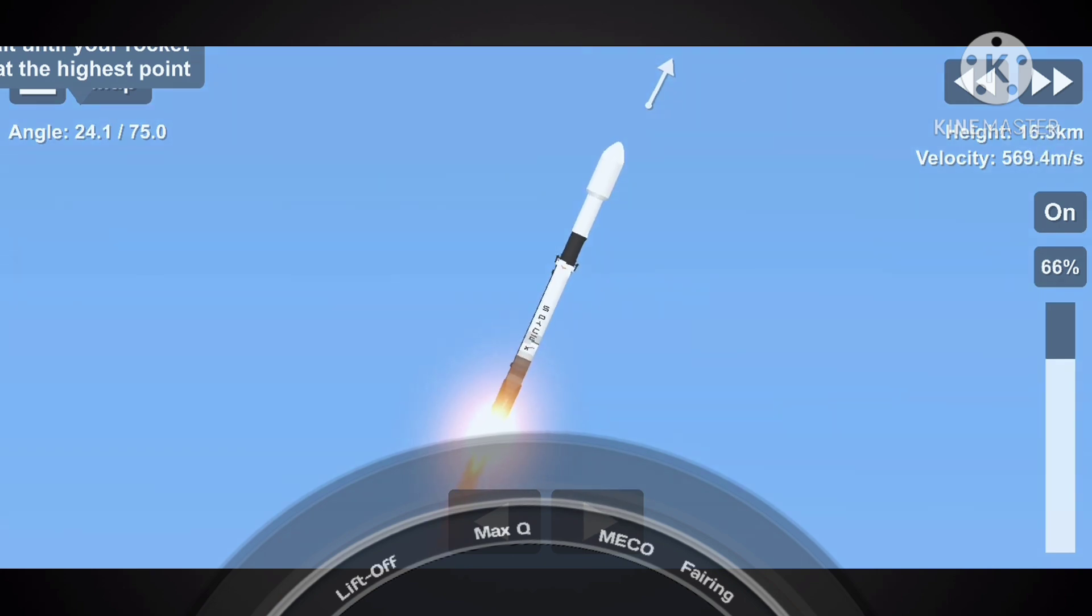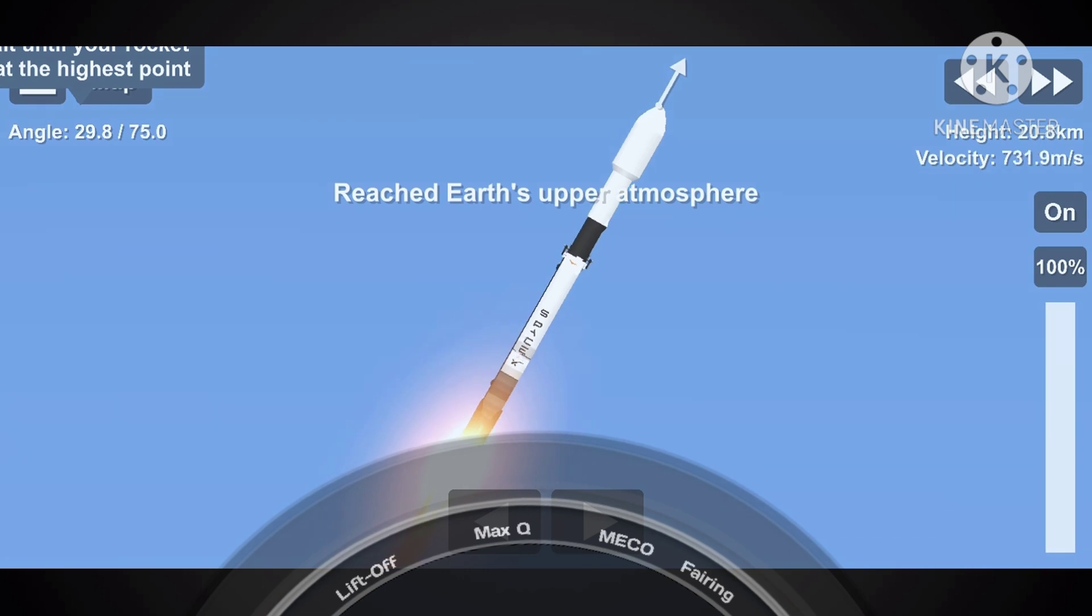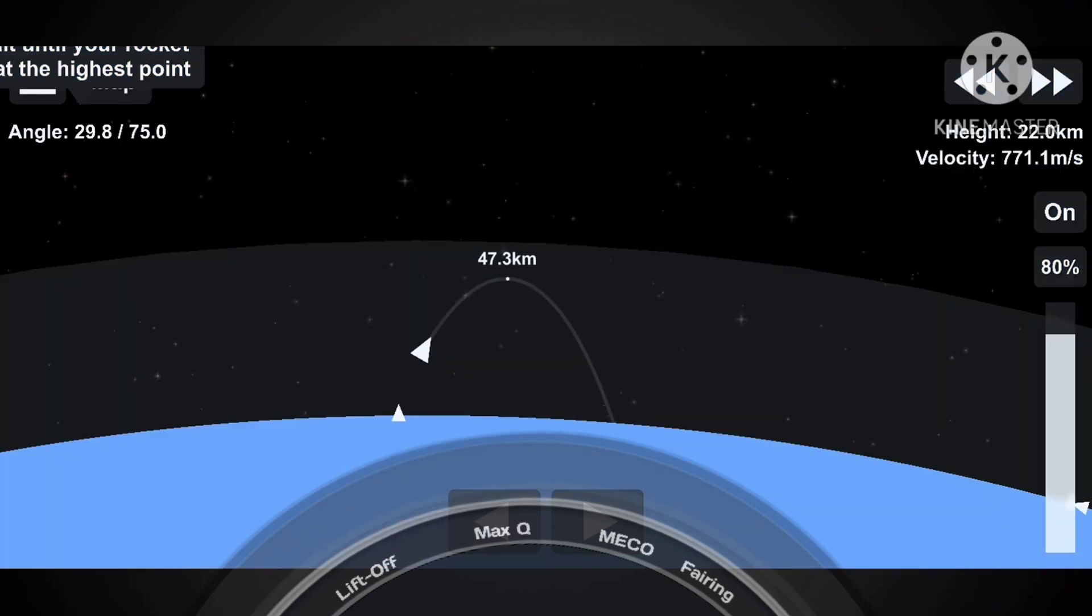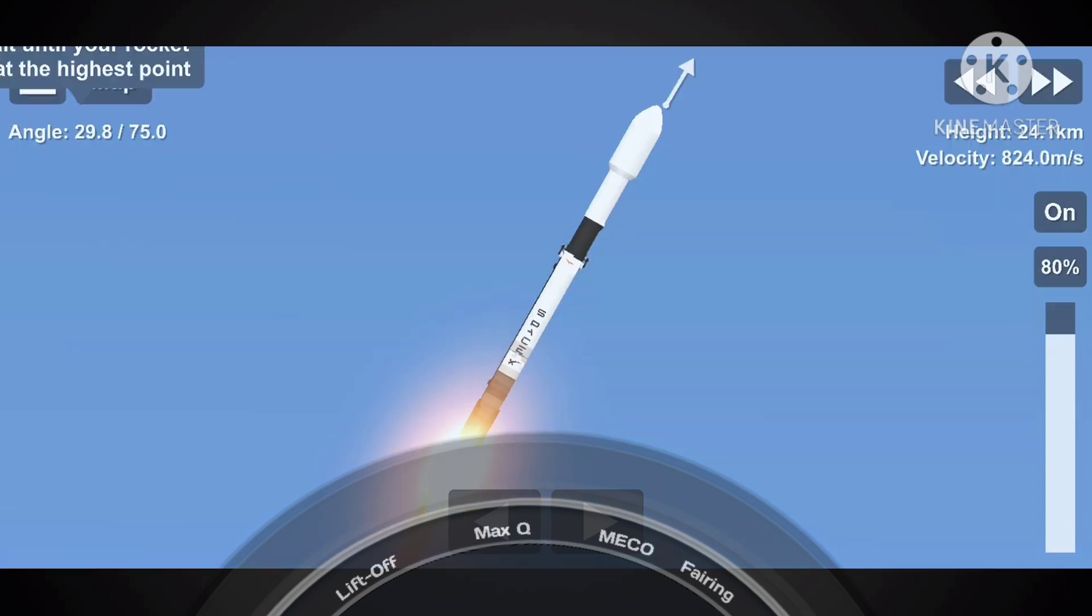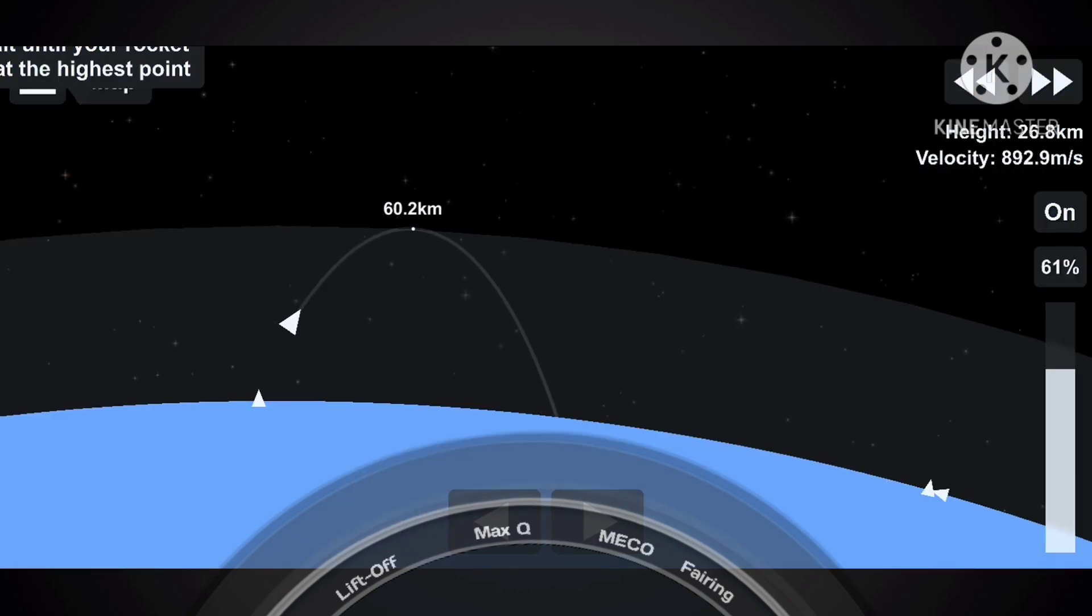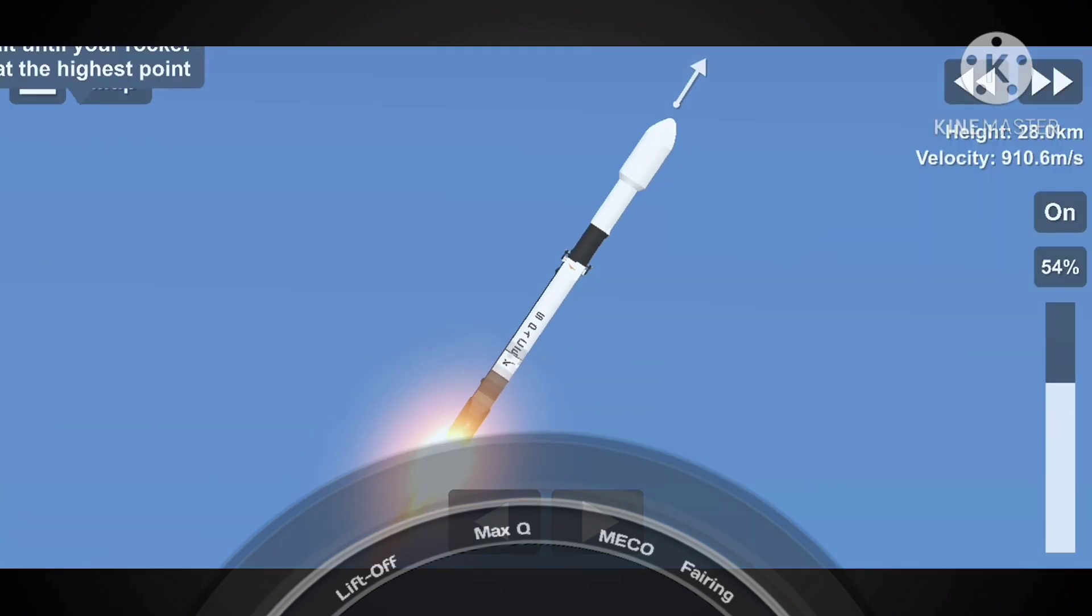We just passed through max Q. In about a minute, we will have three events that happen very quickly: MECO or main engine cutoff, stage separation, and SES-1 or second engine start one. Main engine cutoff is where all nine M1D engines shut down to slow the vehicle in preparation for stage separation, when the first stage separates from the second stage.